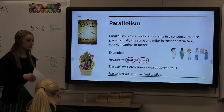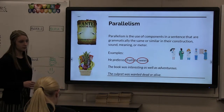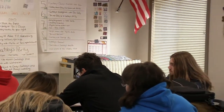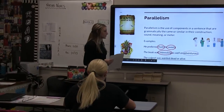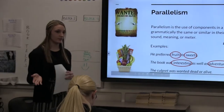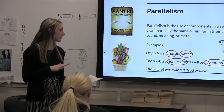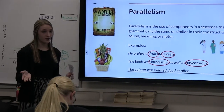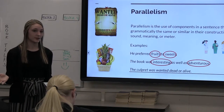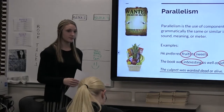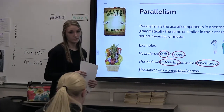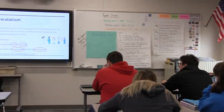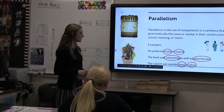'The book was interesting as well as adventurous.' Does anyone know what two words would be parallel to each other? It is interesting and adventurous — they're kind of similar. Just like fruits and sweets are both types of food, interesting and adventurous are similar when describing something. Then 'Is it better dead than alive?' — dead and alive would be a representation of parallelism.